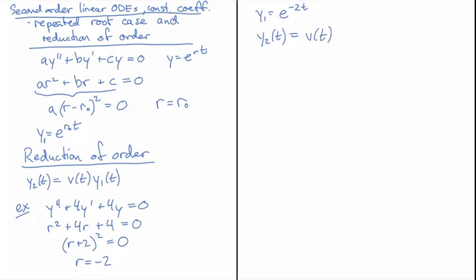So it's very important this v has to be a function of t. If v is a constant then it's not going to give us anything new because we're multiplying it by e^(-2t) which is already, we already know that's a solution.